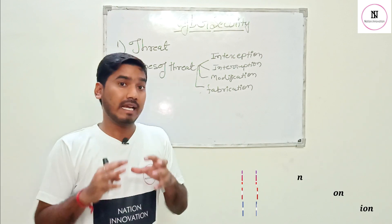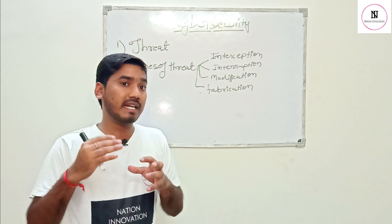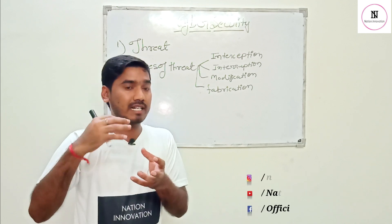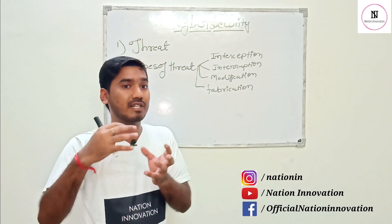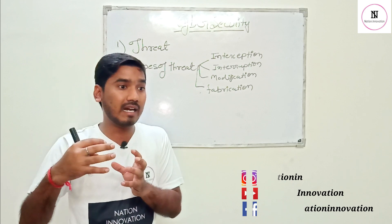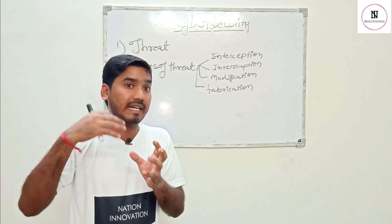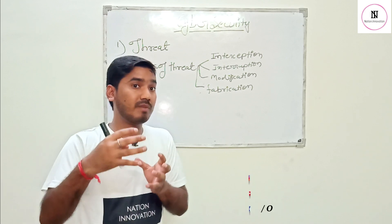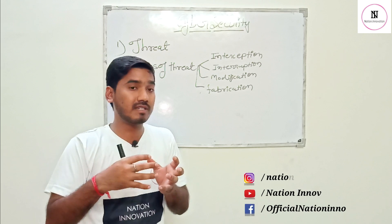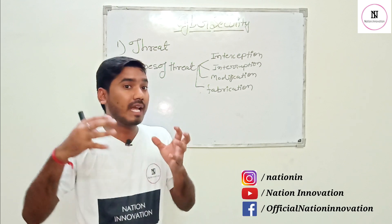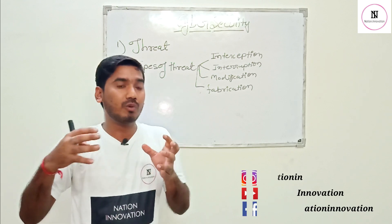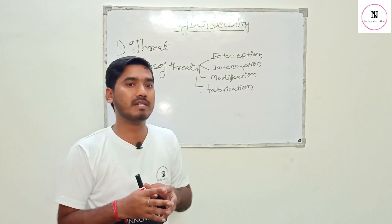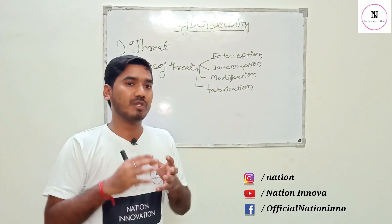The second type is interruption. In interruption, an unauthorized user gains access to your system and can access your service or data in a way that damages or causes harm to your information and service, so that the legitimate user will not be able to access the information.